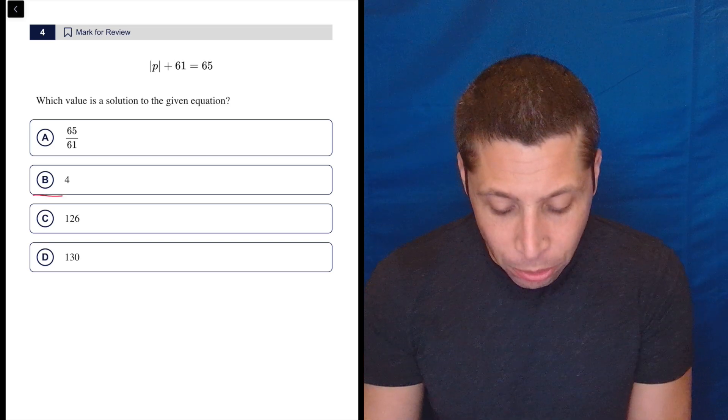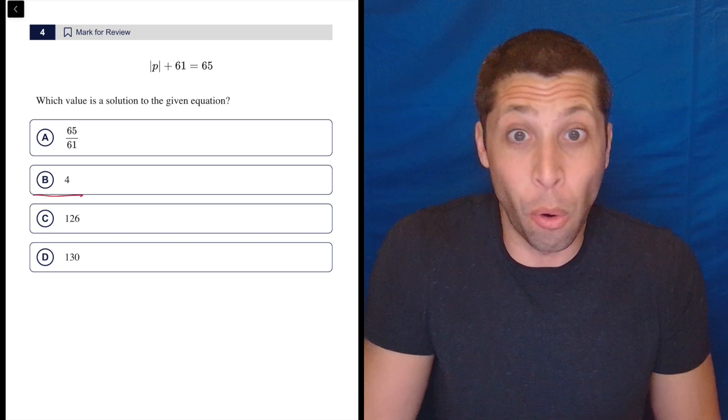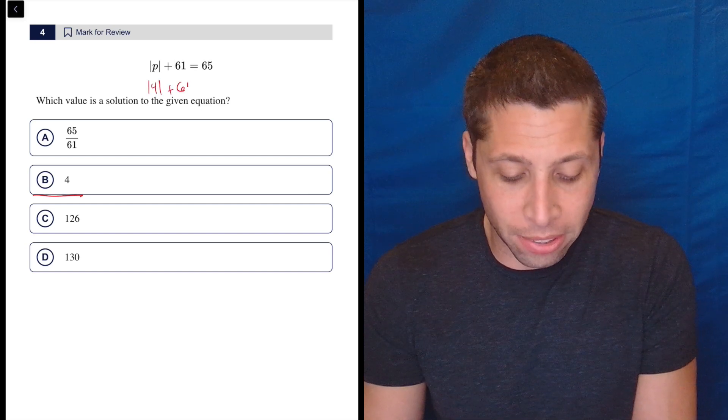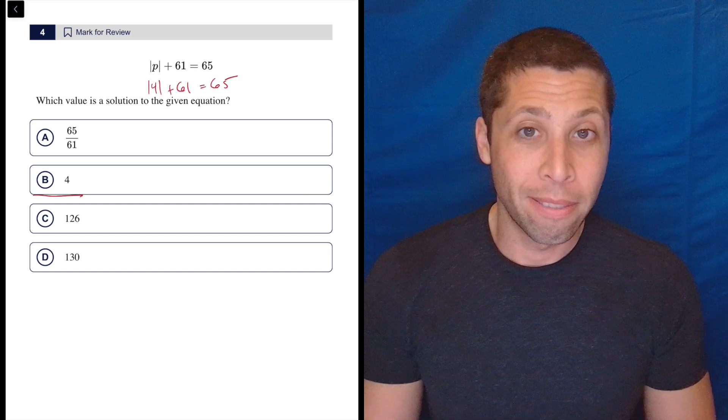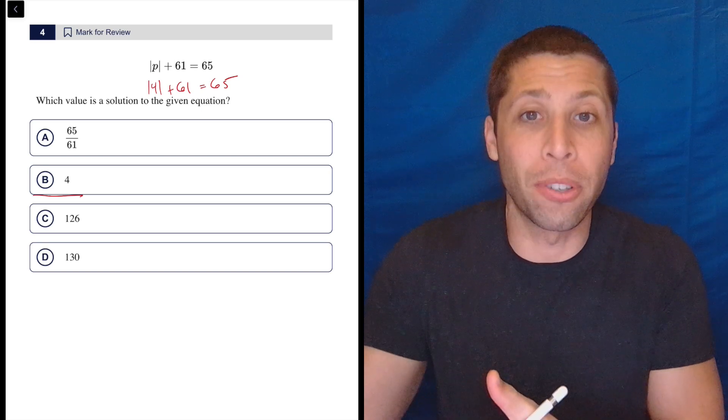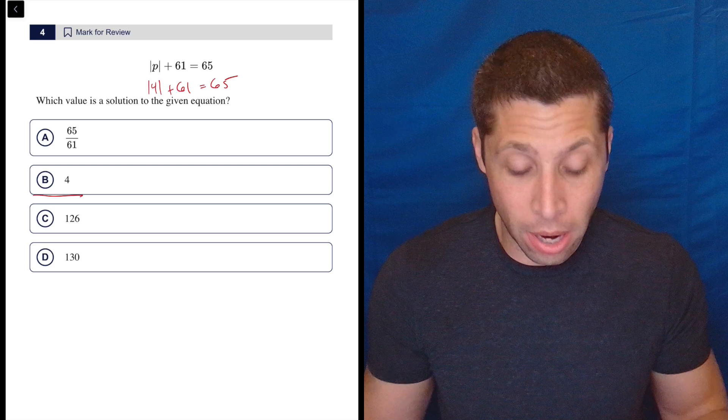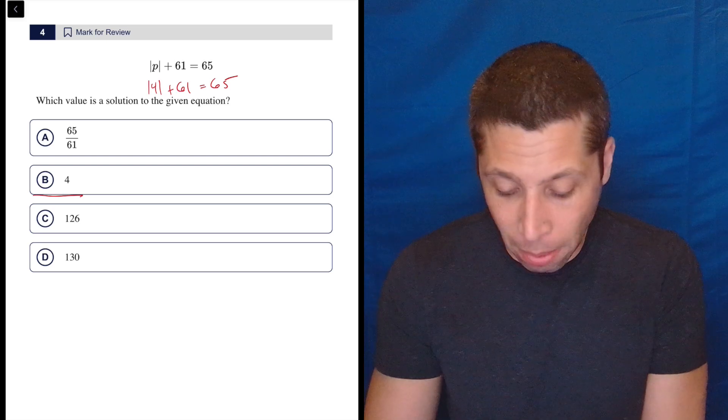My laziness says, why don't we just try out the easiest answer, something I can think about really easily? If I put the absolute value of four plus 61, yeah, because absolute value has no effect on numbers like that. It only affects negative numbers. So four is just four. Four plus 61 is 65. I'm done.